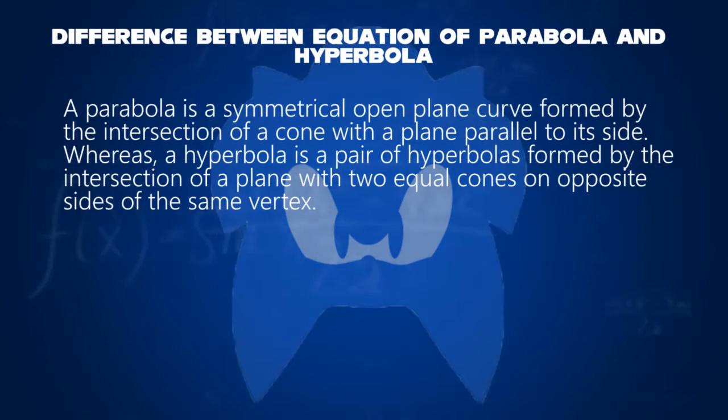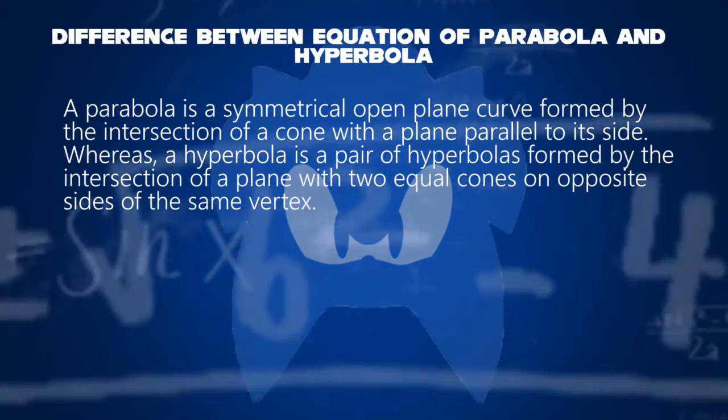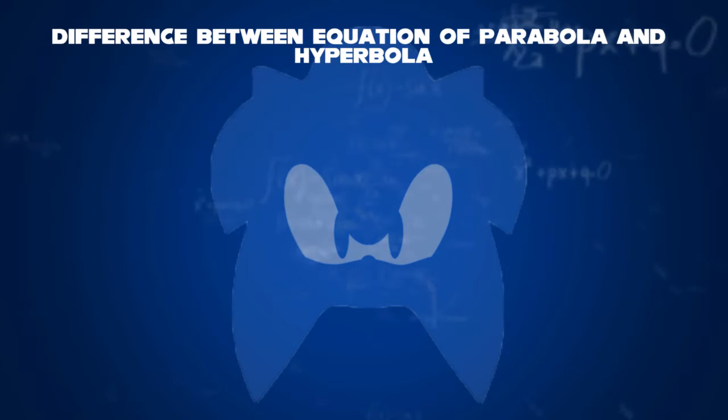A parabola is a symmetrical open plane curve formed by the intersection of a cone with a plane parallel to its side. Whereas, a hyperbola is a pair of hyperbolus formed by the intersection of a plane with two equal cones on opposite sides of the same vertex.